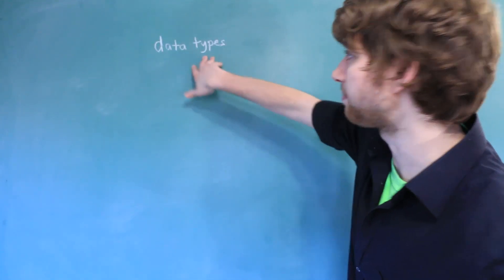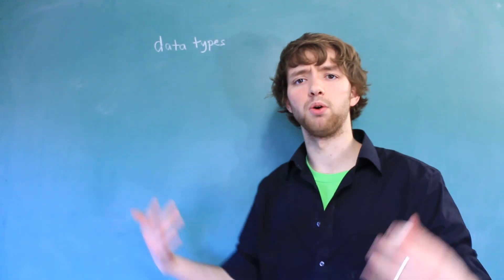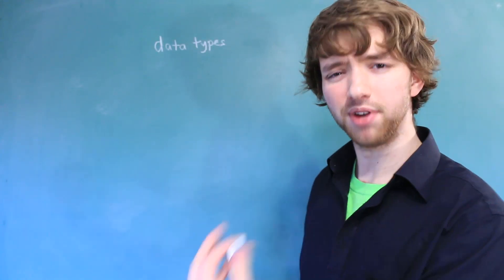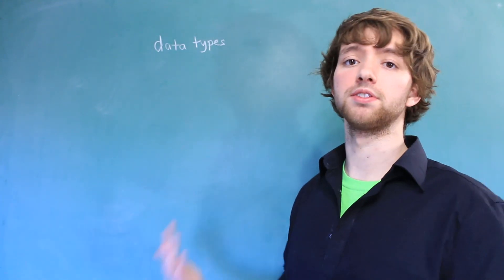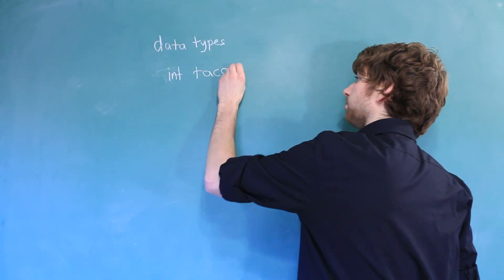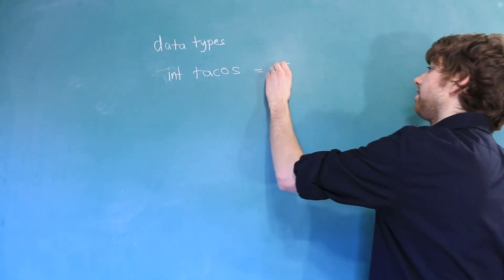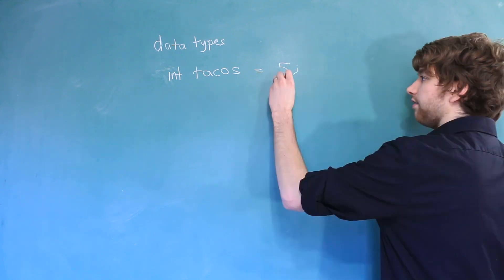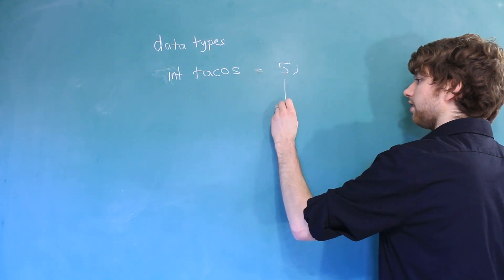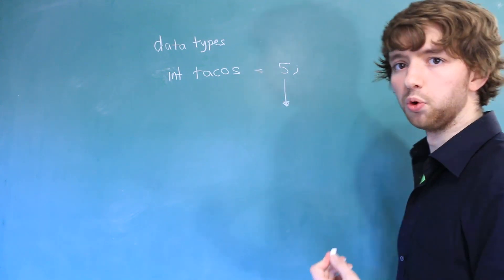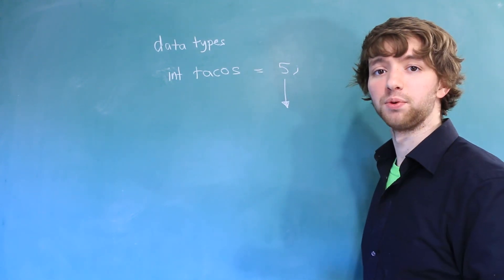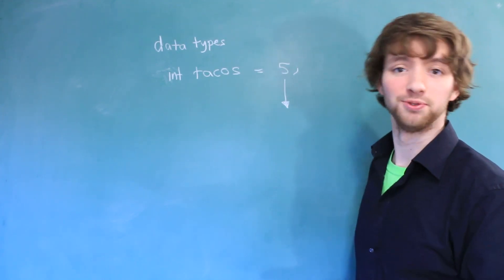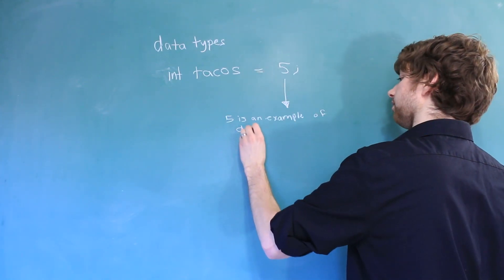Now before we start talking about the types of data, let's first talk about what data is. Well the best way to discuss data is to imagine that we have a variable that holds some data. So let's say we have a variable called tacos and it stores the value 5. The 5 is a piece of data. By the way, an individual data is called a datum, but I personally think that word sounds dumb so I'm not going to use it. 5 is an example of data.